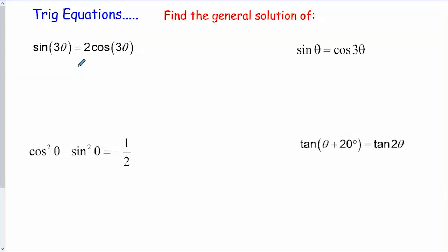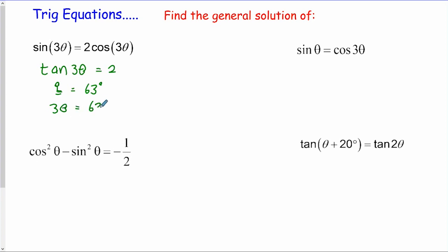If we've got sin and cos in the same equation with the same angle, I can use the trick of dividing both sides through by cos. Remember sin over cos is tan. Tan of 3 theta equals 2. I get a key angle by doing inverse tan of 2 - that's about 63 degrees. My answers: 3 theta equals 63 degrees plus 180k - that's my general solution. Dividing through by 3: theta equals 21 degrees plus 60k. There's my general solution, k an integer.